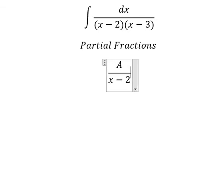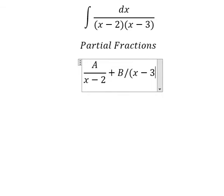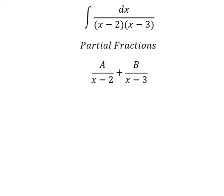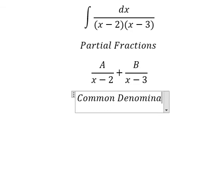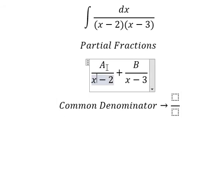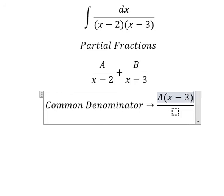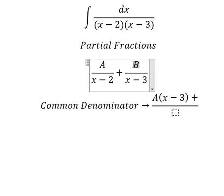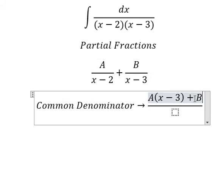over x minus 2 and capital B over x minus 3. Later we do common denominator. About this one, capital A is missing x minus 3, so capital A will multiply by x minus 3. About capital B, we are missing x minus 2, so we need to multiply by x minus 2.